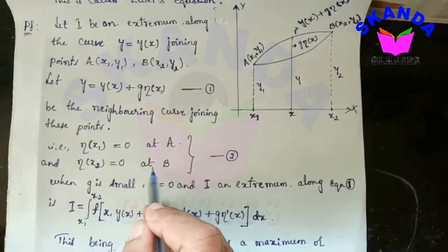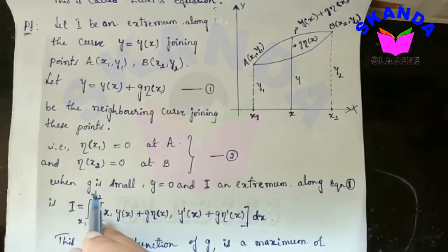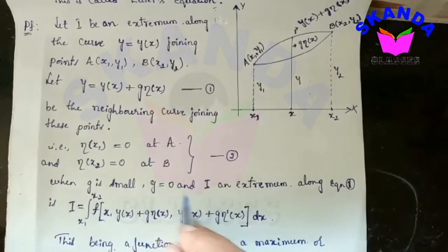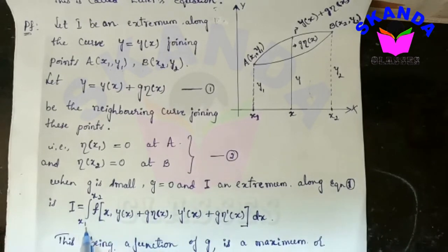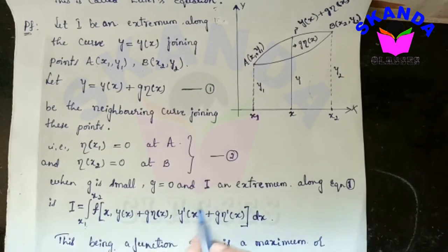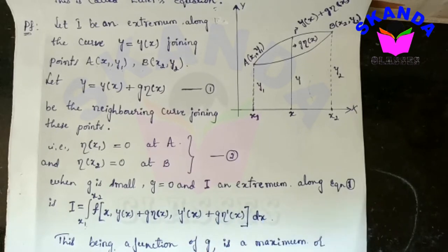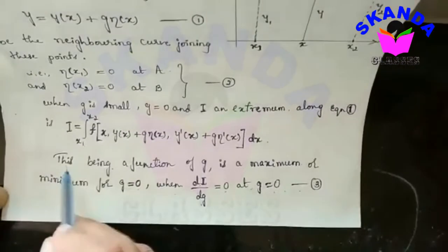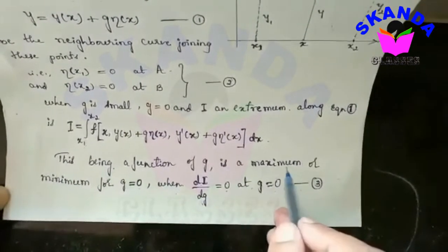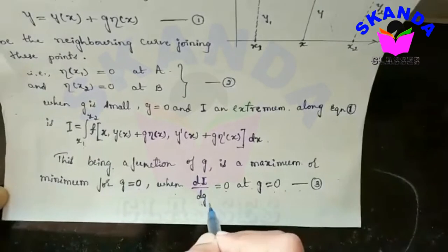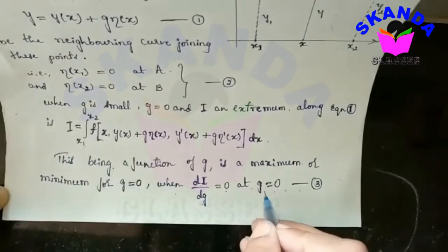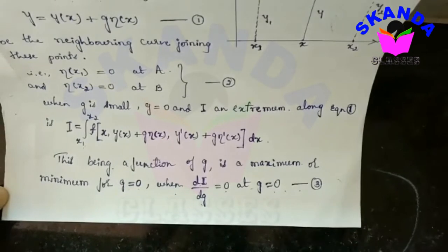Proof. This is equation 2. When g is small and equals 0, i is an extremum along equation 1, that is i equals the integral from x1 to x2 of f(x, y(x) + g·η(x), y'(x) + g·η'(x)) dx. This being a function of g is a maximum or minimum for g equals 0 when di/dg equals 0 at g equals 0. This is equation 3.